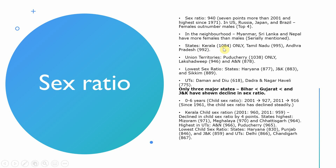State-wise, Kerala has the highest sex ratio at 1084 females per 1000 males — 84 more than males. Tamil Nadu has 995, and Andhra Pradesh has 992. Among Union Territories (when Jammu & Kashmir had special status), Puducherry has 1038, Lakshadweep has 946, and Andaman & Nicobar has 878. The lowest sex ratios are in Haryana at 877, Jammu & Kashmir at 883, and Sikkim at 889.